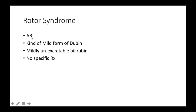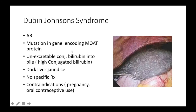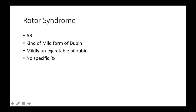The last one is Rotor syndrome, and it is also autosomal recessive. So both Dubin-Johnson and Rotor syndrome are autosomal recessive. However, Rotor syndrome is a mild form of Dubin-Johnson — there's mild unexcretable bilirubin — and there's also no specific treatment for Rotor syndrome patients. The key takeaway is that Dubin-Johnson and Rotor are both under high levels of conjugated bilirubin. Dubin-Johnson, as the name implies, D for dark — that is a dark liver jaundice. And Rotor is a result of mild unexcretable bilirubin.